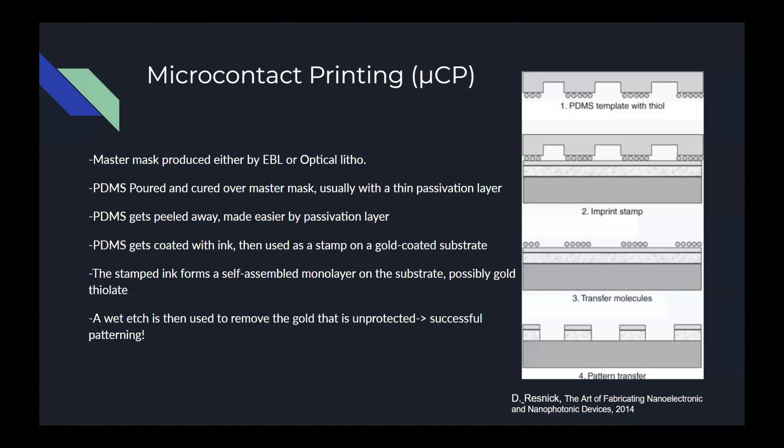A wet etch can be used to etch away the areas not protected by the monolayer. A benefit of this process is that because the imprint is a negative of the mask and the substrate is a negative of the imprint, mask and substrate end up being identical. In this way, this process is popular for copying patterns. The flexibility of the PDMS can be useful for patterning non-planar surfaces, but it also results in very poor alignment for multi-patterning.